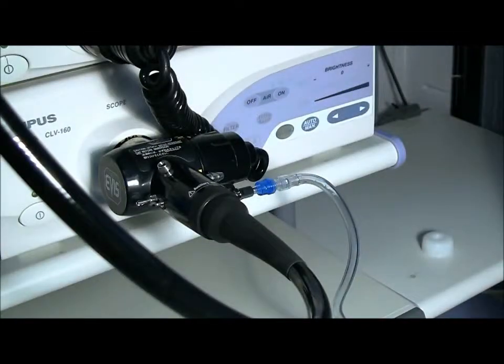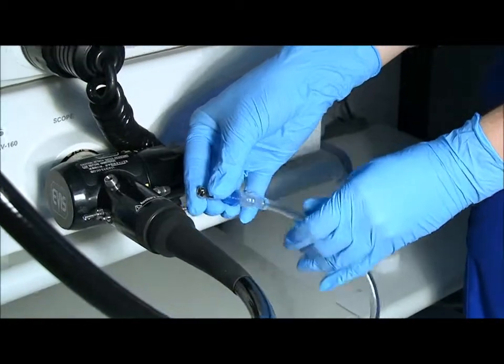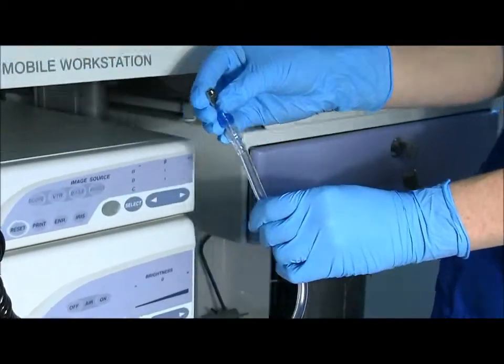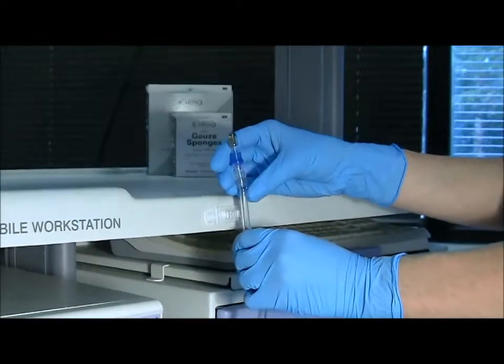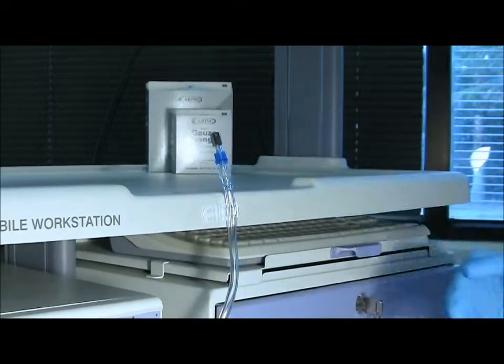After the case has ended, take the endogator tubing and connector and disconnect it from the scope maintaining a clean distal tip. Then place the tubing on the tube connector stuck to the trolley. When you are ready for your next case, simply reverse the steps.